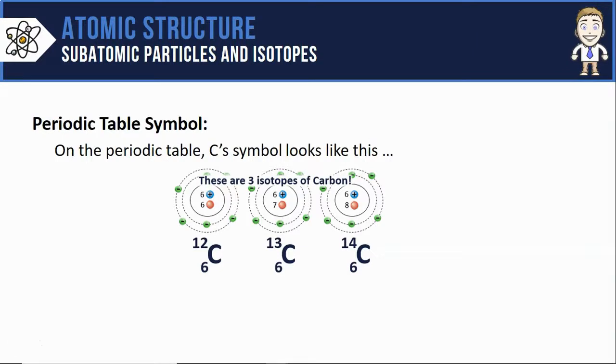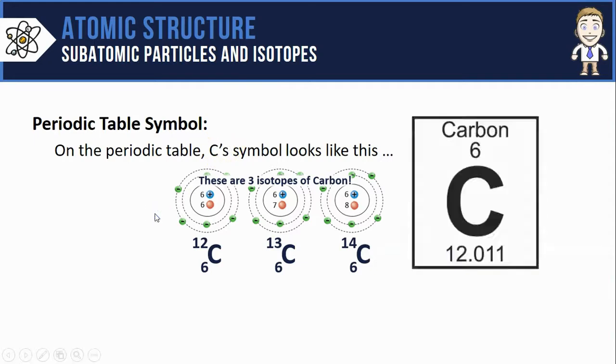Let's close the video by talking about what you might see on the periodic table for an element like carbon. So here's carbon's symbol from the periodic table. It's got the element symbol C in the middle. My atomic number of 6 is now shown on the top, and the atomic mass is now shown on the bottom: 12.011.